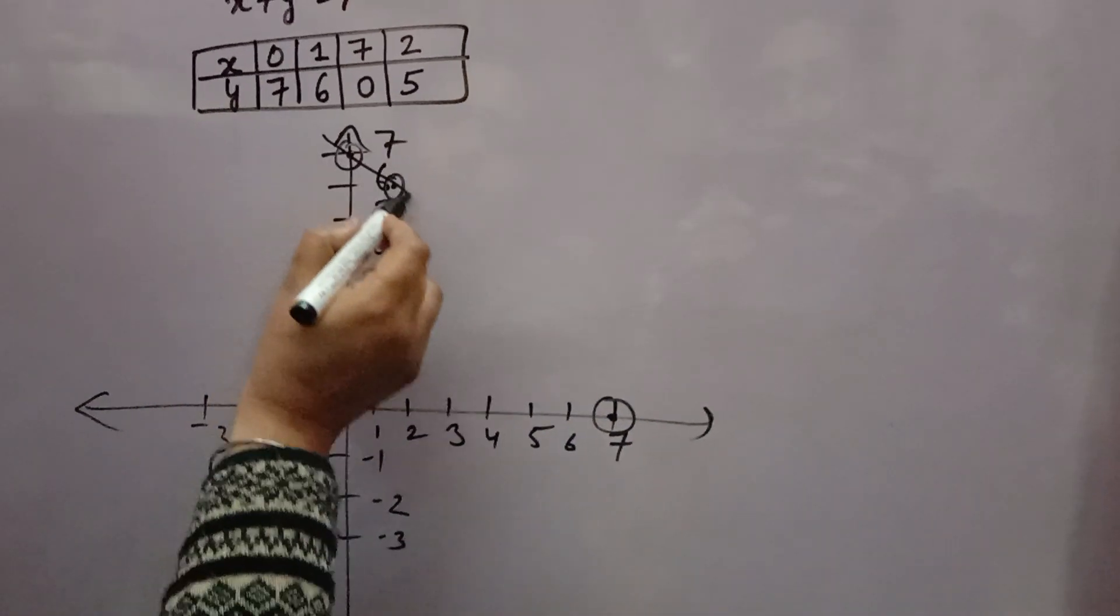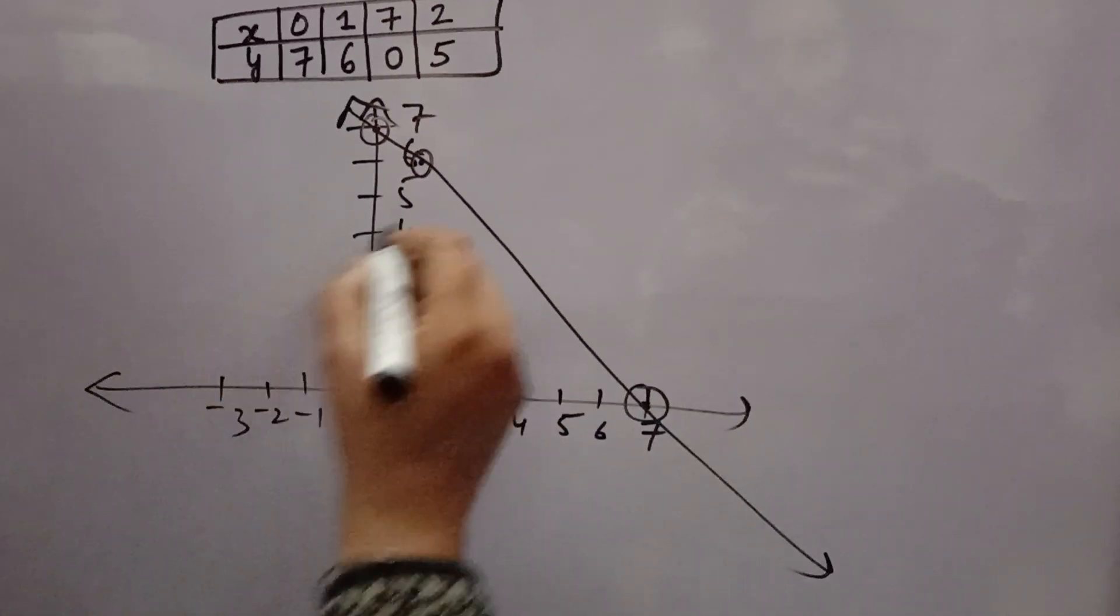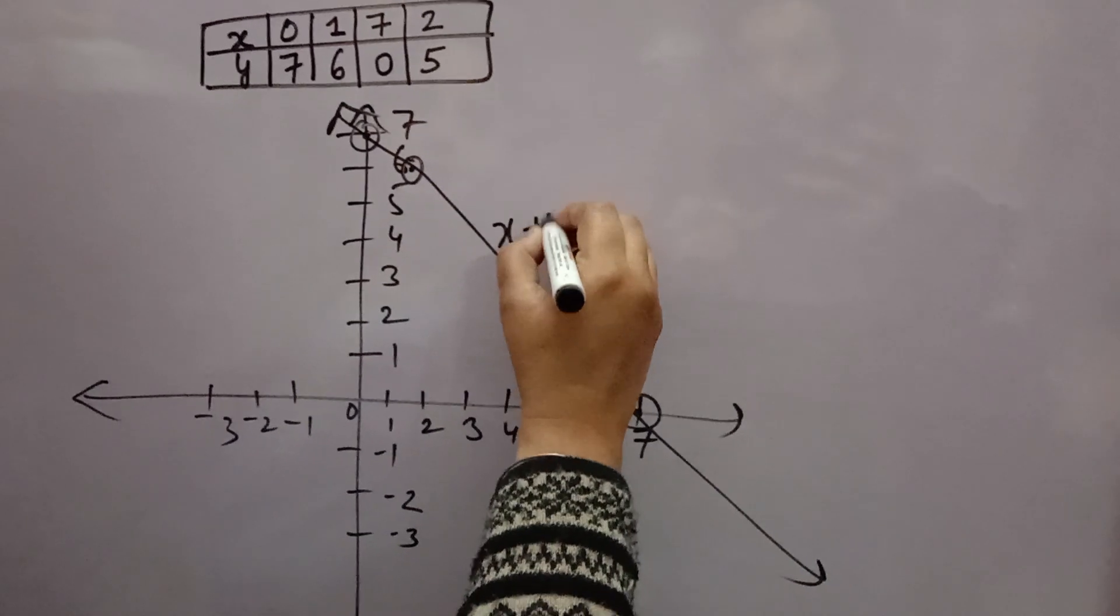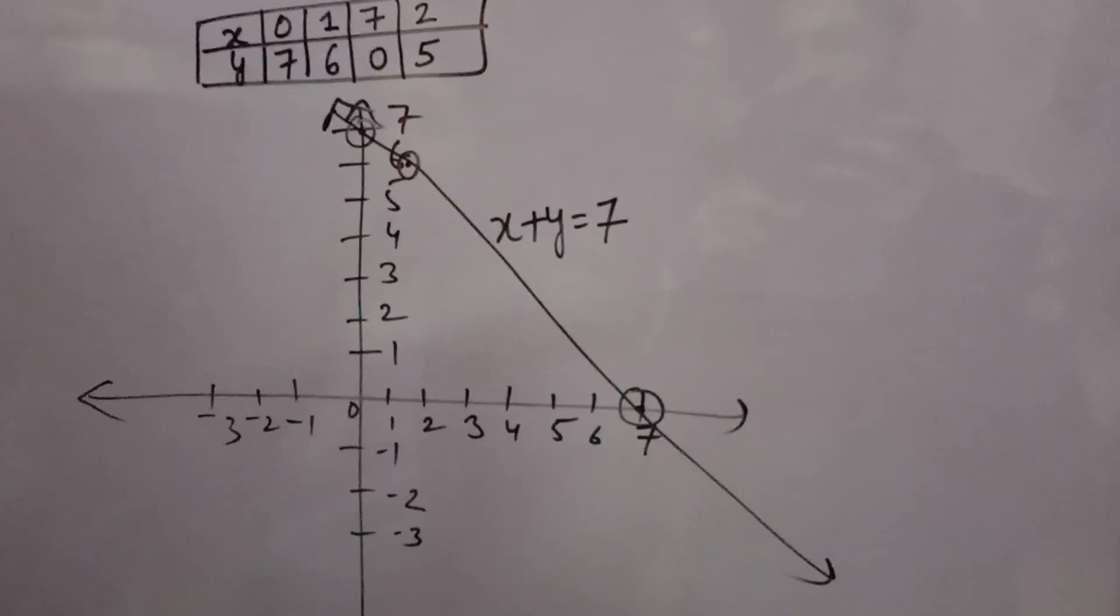Now you can join the points with the help of a scale on your graph paper. You will get a line like this. You can write x plus y equals 7. This is the graph for this equation. Thank you.